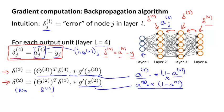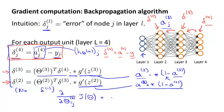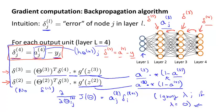The derivation is surprisingly complicated and involved. But if you just do these few steps of computation, it's possible to prove via a somewhat complicated mathematical proof that if you ignore regularization, then the partial derivative terms you want are exactly given by the activations and these delta terms. This is ignoring lambda, or alternatively if the regularization term lambda were equal to zero. We'll fix this detail later. By performing backpropagation and computing these delta terms, you can pretty quickly compute these partial derivative terms for all of your parameters.